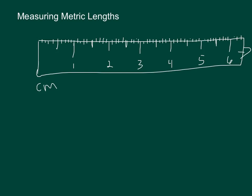Each of those smaller lines represents a millimeter. So the big lines that are numbered are going to be one centimeter, and then the smaller ones are going to be millimeters. If you were to count how many millimeters make up one centimeter, you would find that ten millimeters equals one centimeter.